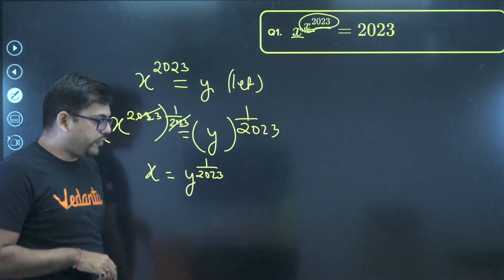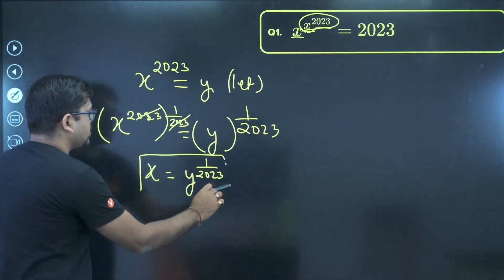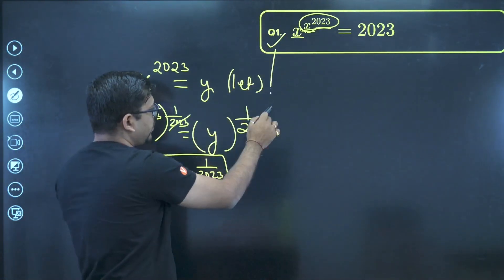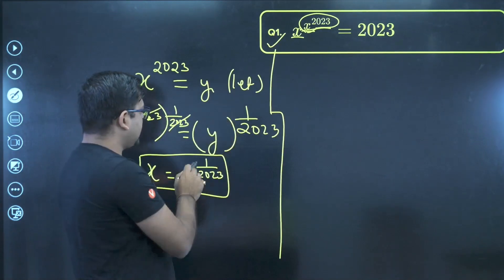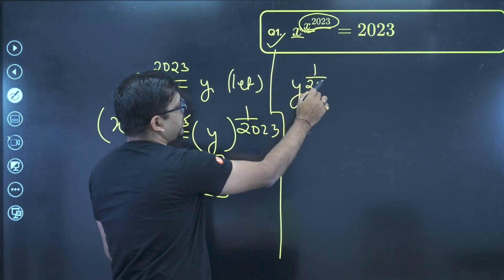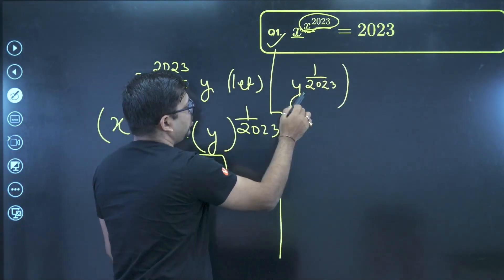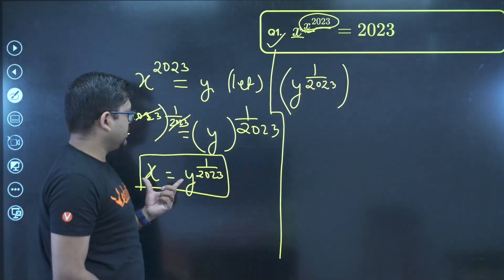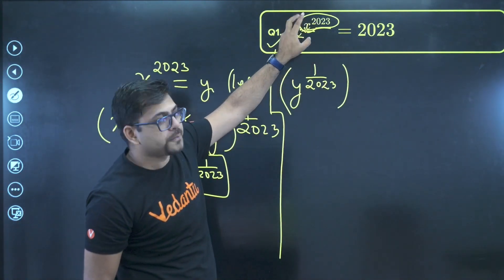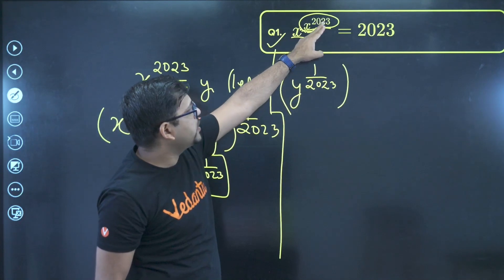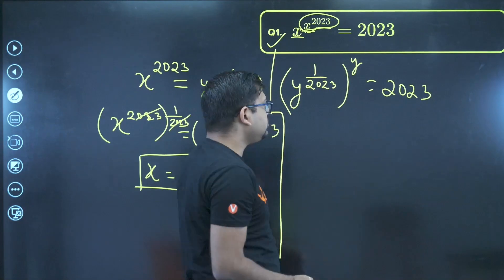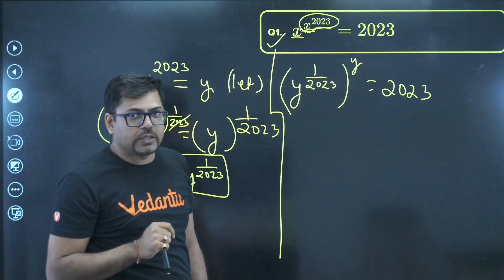Now once we have got this value of x, let's substitute this value in the original equation itself. So in this original equation, what will happen? We have this x as y raised to power 1 by 2023, and then whole raised to power. So this is x, this is x, and this whole raised to power, this entire thing we had assumed y. So this y whole raised to power this thing, that is y, and equals to 2023. So now we have reached at this conclusion.